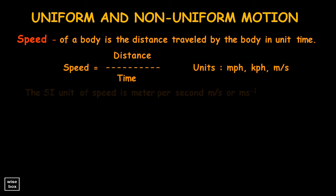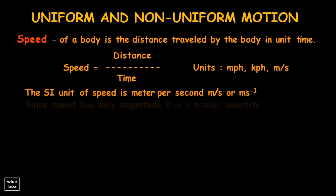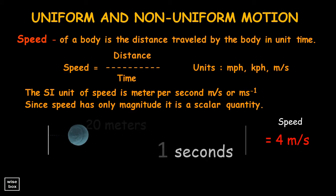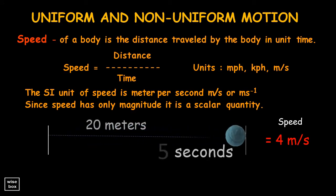The SI unit of speed is meter per second. Since speed is only magnitude, it is a scalar quantity. For example, a ball rolled a distance of 20 meters for 5 seconds. The speed would be calculated as 20 divided by 5, which equals a speed of 4 meters per second.